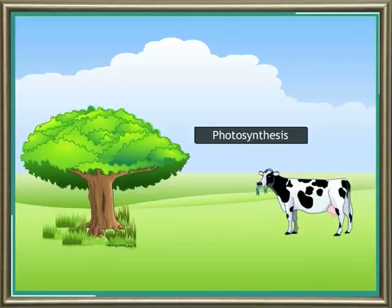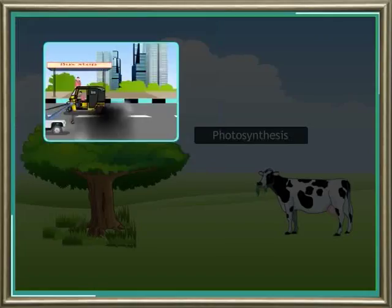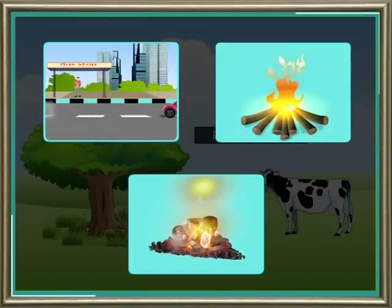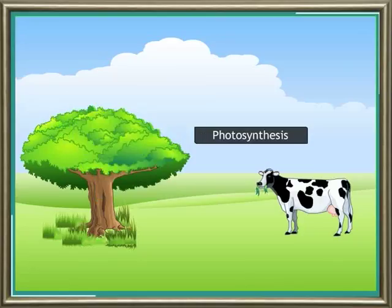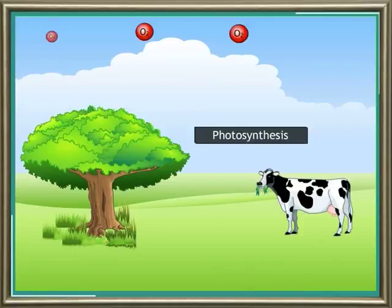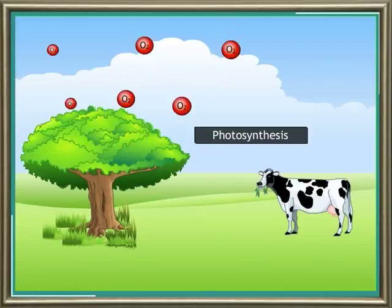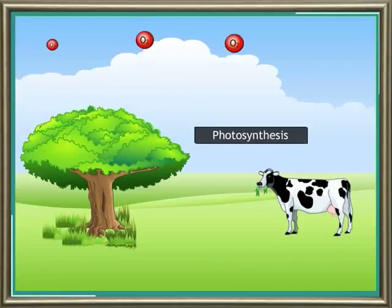Carbon dioxide is released when fuels like petrol, wood, and coal are burned. This is also fixed by plants during photosynthesis. The by-product of photosynthesis is oxygen, which is released into the air. In this way, the amount of oxygen present in the air is constantly maintained.